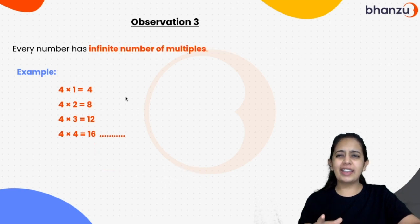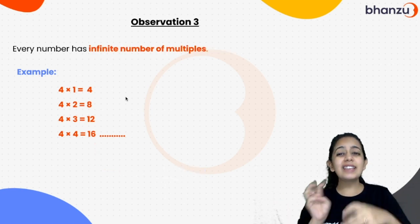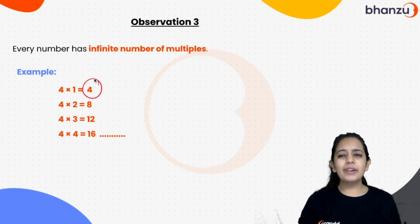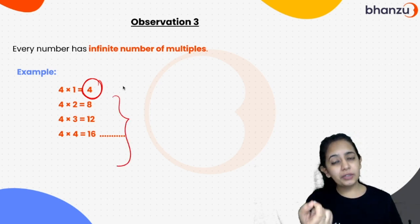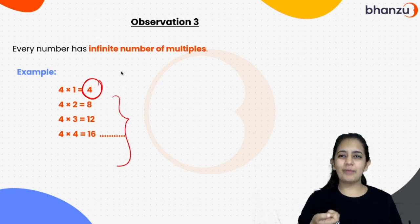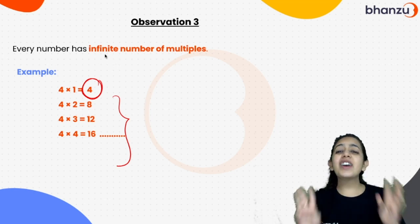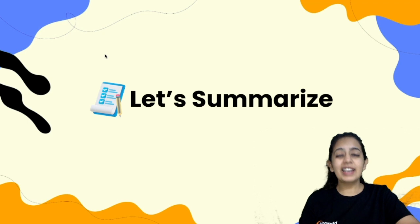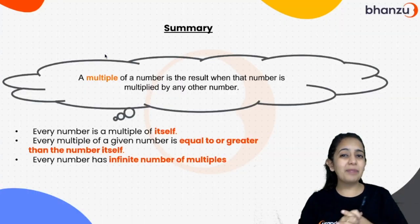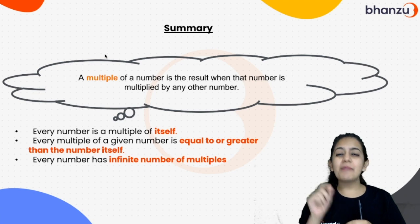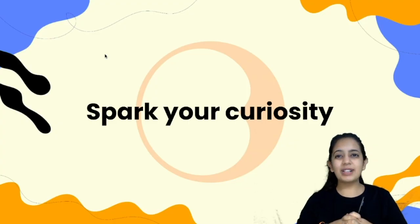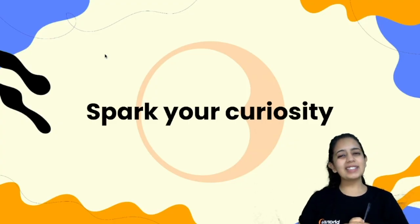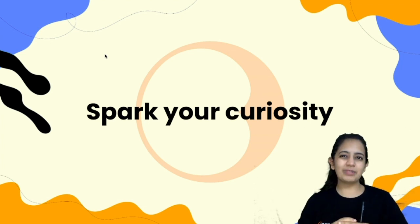And the third observation is that there are an infinite number of multiples. So to summarize: first, every number is a multiple of itself. Second, all multiples of a number are either equal to or greater than that number. Third, there are infinite multiples of any number. A multiple of a number is the result when that number is multiplied by some other number. Now you try to find multiples of a few numbers. I'll see you in the next lesson where we'll look at where multiples are used in real life. Take care, see you. Have a happy learning!